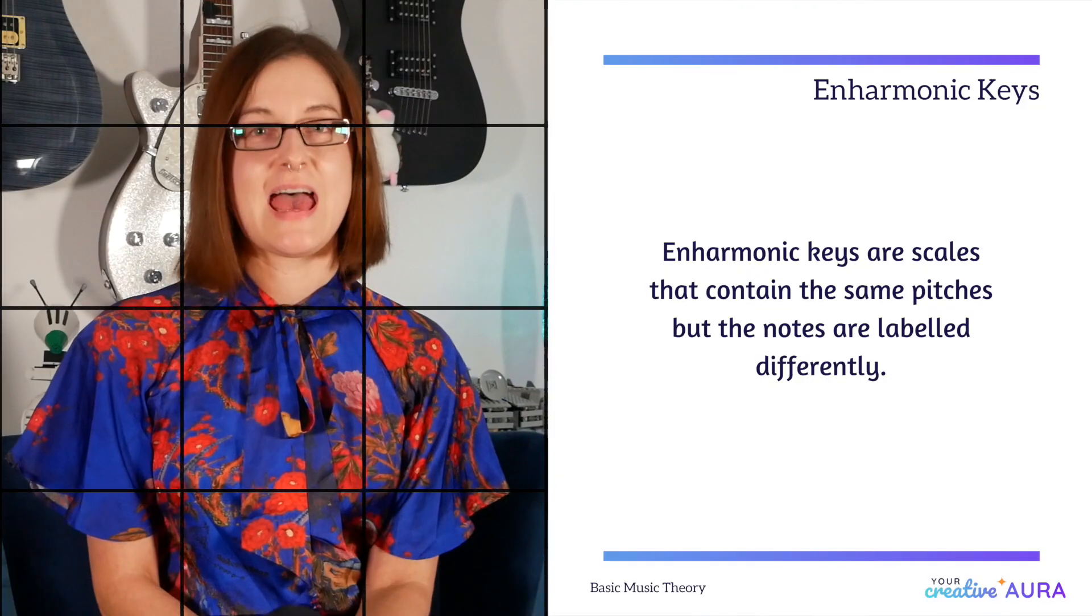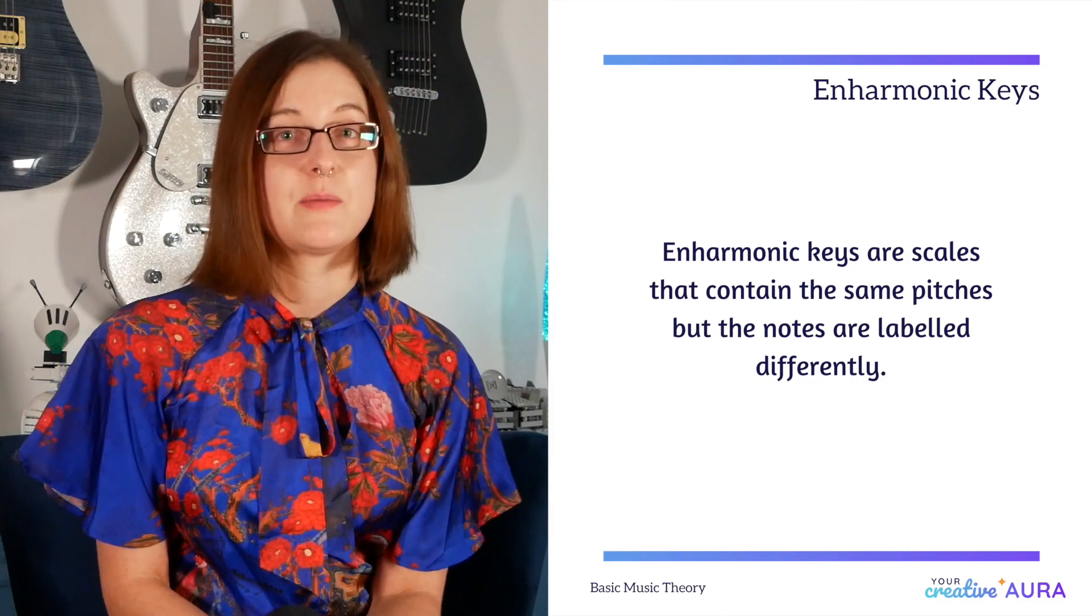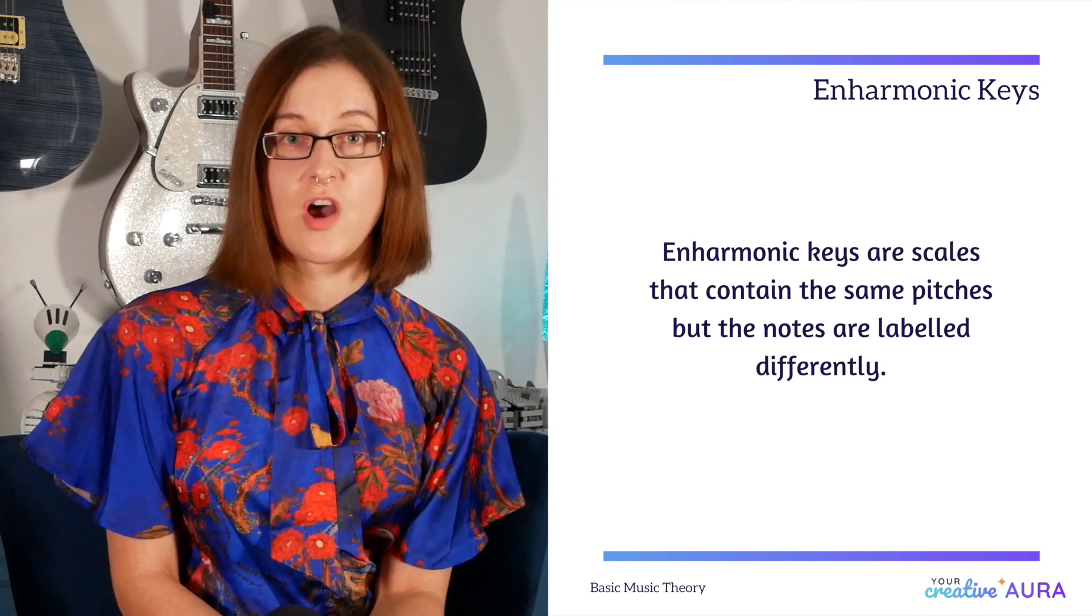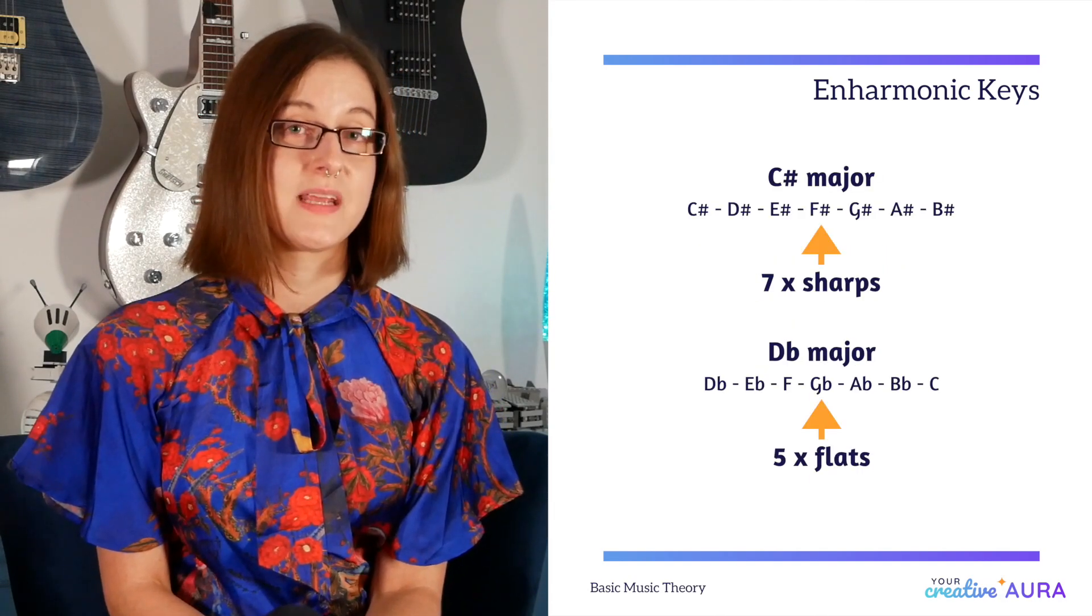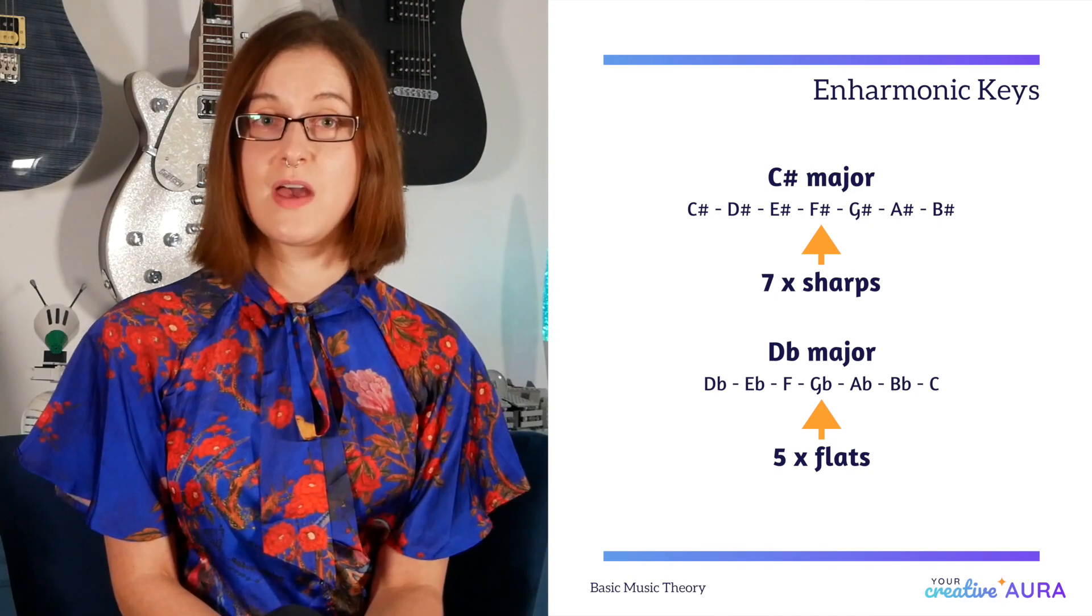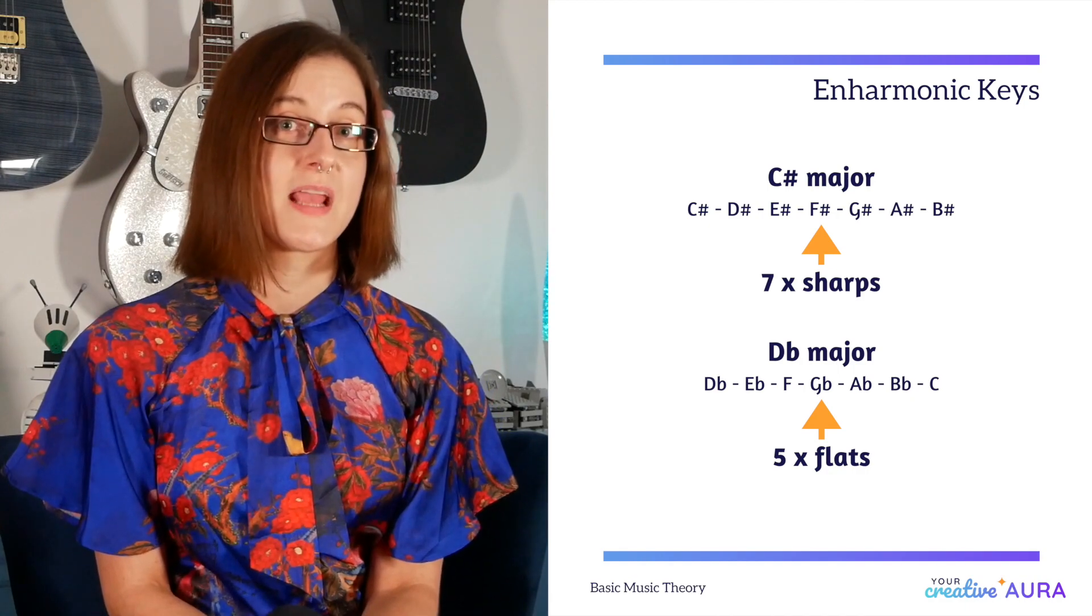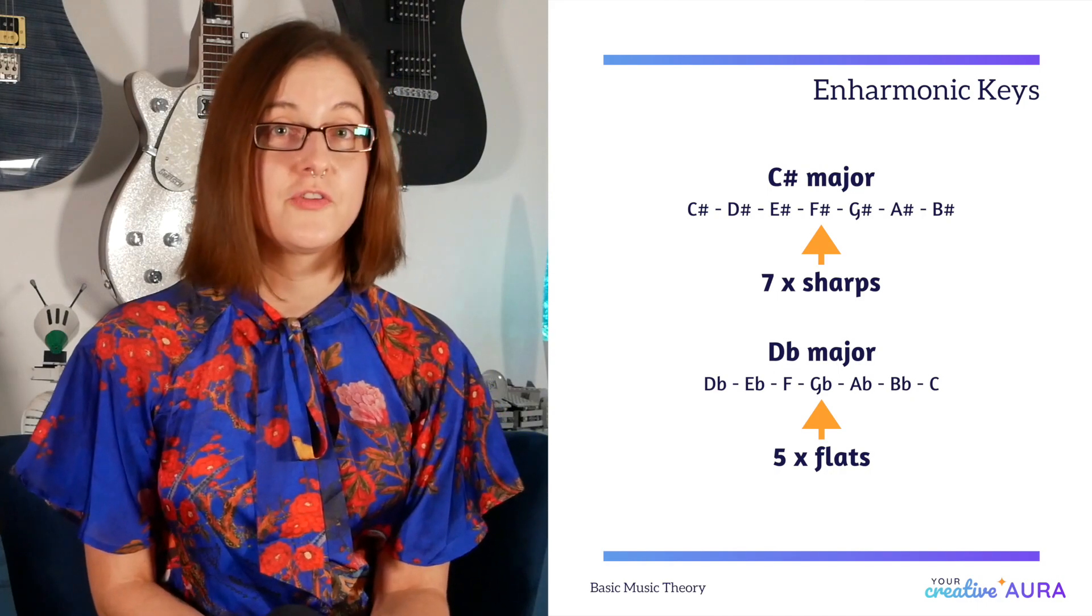Now let's refer to enharmonic keys. Enharmonic keys are scales which contain the same notes but are labelled differently. An example would be the key signature of C sharp major and D flat major. C sharp major contains seven sharp notes and D flat major contains five flats. However each note sounds the same when they're played or sung.